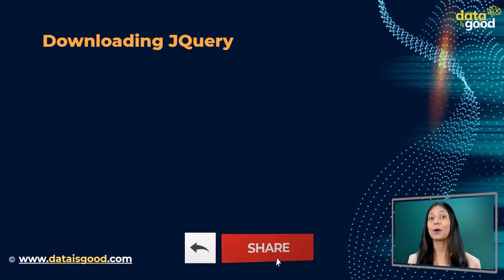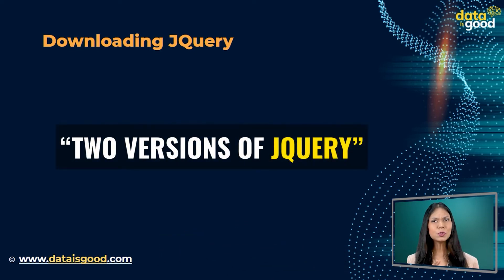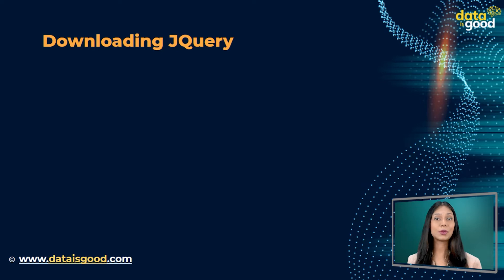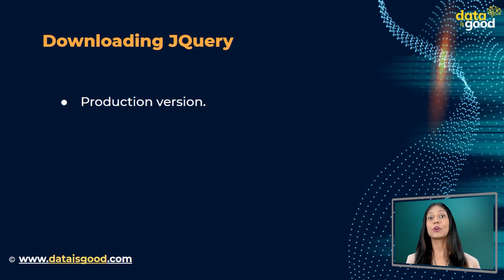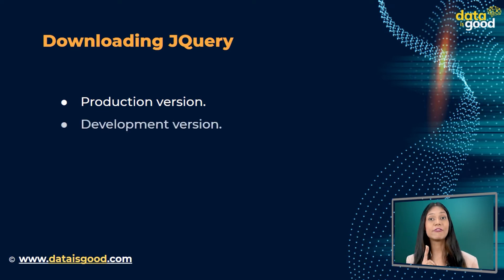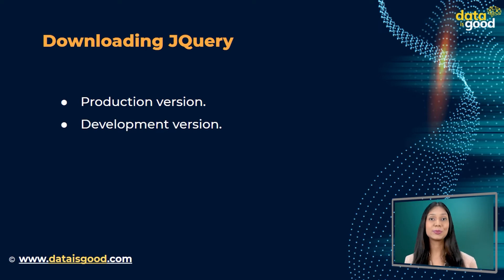First, let us see how to download jQuery. There are two versions of jQuery available for downloading. The production version — this is for your live website because it has been minified and compressed. The second is the development version — this is for testing and development, with uncompressed and readable code.